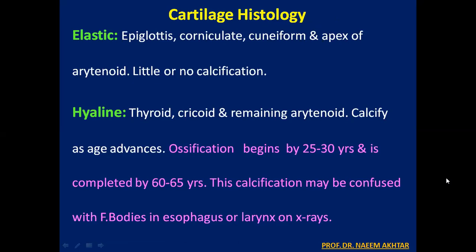Regarding cartilage histology, laryngeal cartilages are either elastic or hyaline. The elastic cartilages are the epiglottis, corniculate, cuneiform, and apex of the arytenoid — with little or no calcification. The hyaline cartilages are the thyroid, cricoid, and remaining arytenoid. These calcify as age advances: ossification begins at 25–30 years and is completed by 60–65 years. This calcification may sometimes be confused with foreign bodies in the esophagus or larynx on plain X-rays.